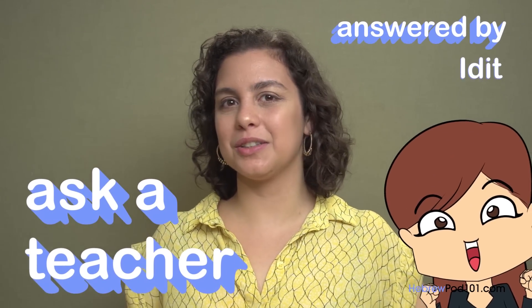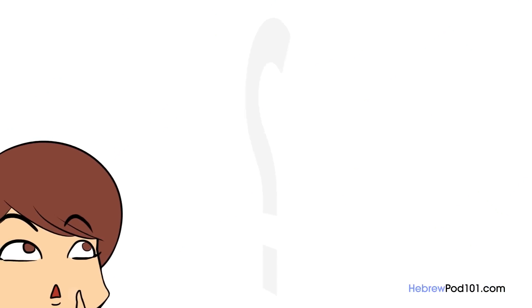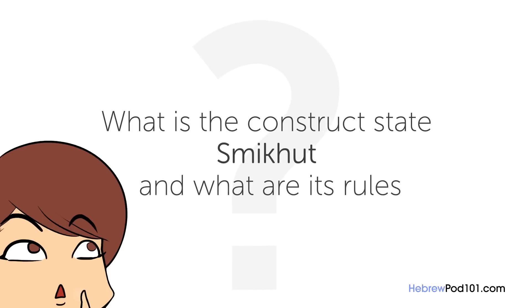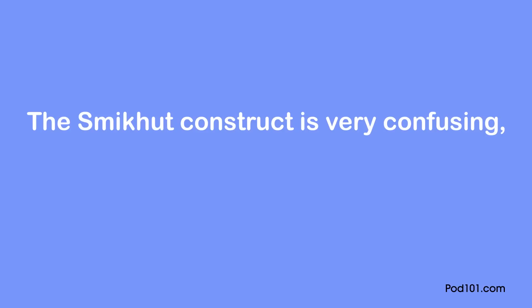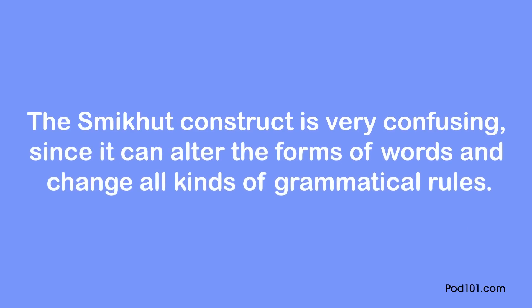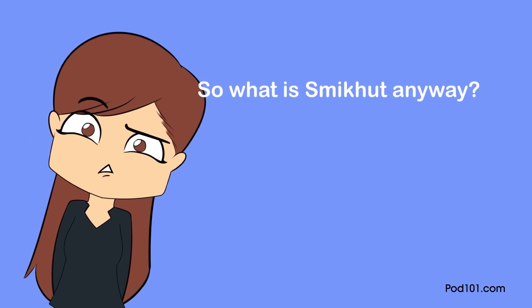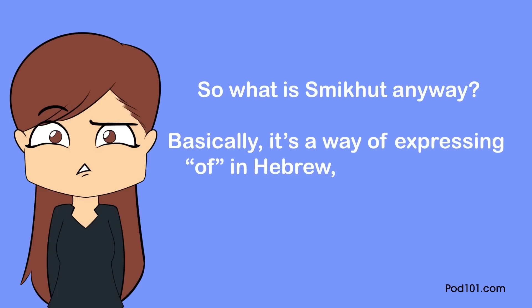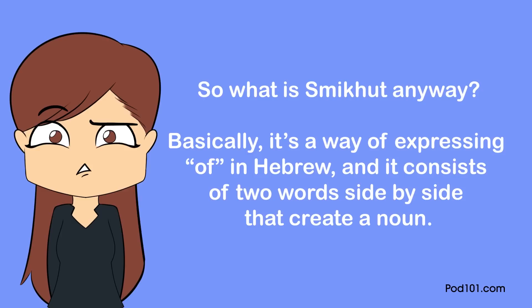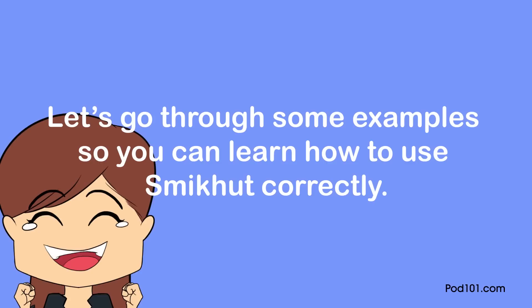Welcome to Ask a Teacher. I'll answer some of your most common Hebrew questions. The question for this lesson is: what is the construct state, 'smichut,' and what are its rules? The smichut construct is very confusing, since it can alter the forms of words and change all kinds of grammatical rules. Let's try to make it clearer. Basically, it's a way of expressing 'of' in Hebrew, and it consists of two words side by side that create a noun.